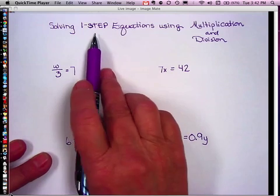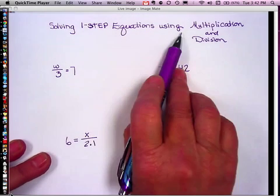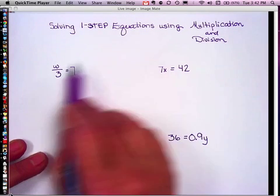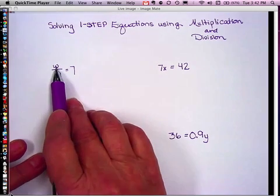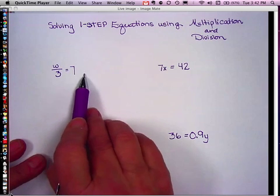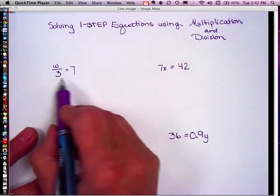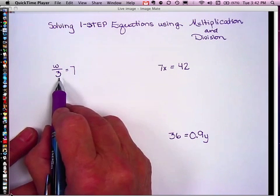This video will show you how to solve one-step equations using multiplication and division. On our first problem, we have w divided by 3 is equal to 7. Remember, when we're solving equations we need to always undo by using inverse operations.